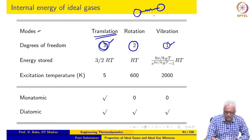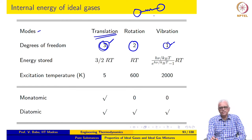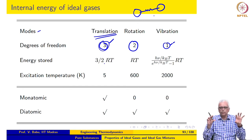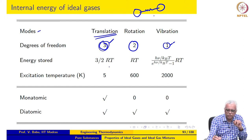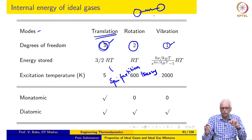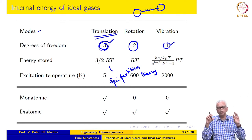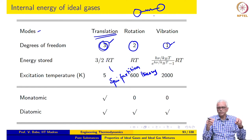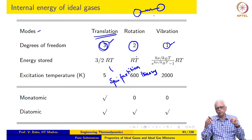Equipartition theory states that for each degree of freedom, the specific internal energy contribution is one-half RT. This comes from equipartition theory in classical mechanics. Translation brings in three degrees of freedom, giving three-halves RT. Rotation brings in two degrees of freedom, contributing RT. Vibrational energy cannot be calculated using classical theory because vibration is quantized.